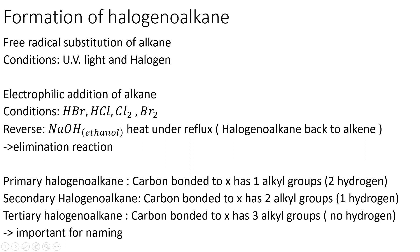Next up, we have the primary halogenoalkane, which is a carbon bonded to X, where X is a halogen. The carbon bonded to X has one alkyl group attached, or equivalently two hydrogens. The secondary halogenoalkane has two alkyl groups, or one hydrogen bonded to the carbon bonded to X. The tertiary halogenoalkane has three alkyl groups but no hydrogens attached.